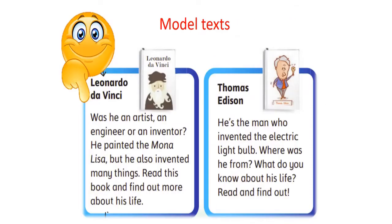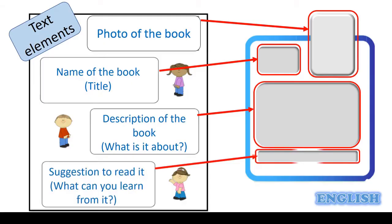Do you remember the text from the previous lesson? One text is about Leonardo da Vinci and the other is about Thomas Edison. Do you remember the main features? Don't worry, let's remember. Here we have the text elements: put a photo of the book, the name of the book or the title, write a description of the book — what is it about — and a suggestion to read it, meaning what can you learn from it?